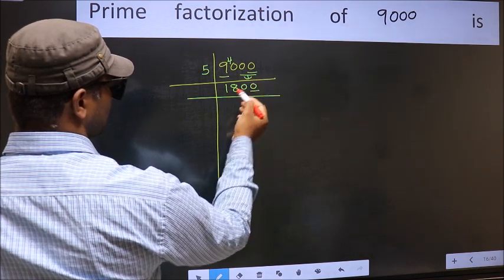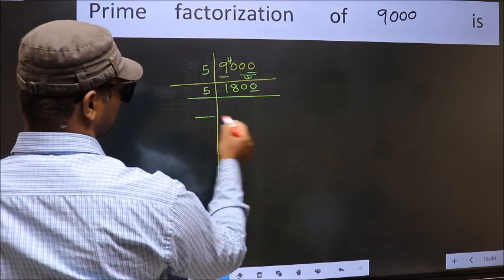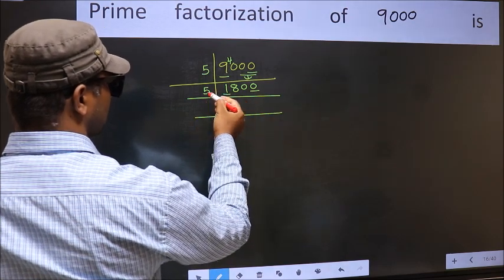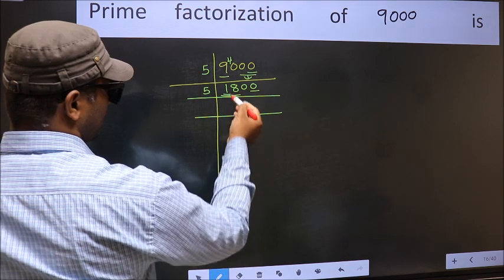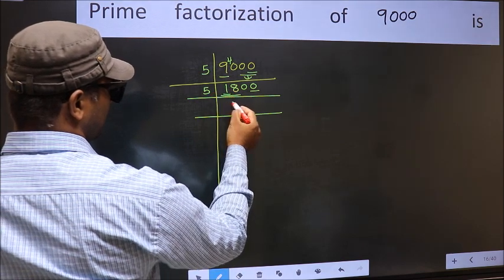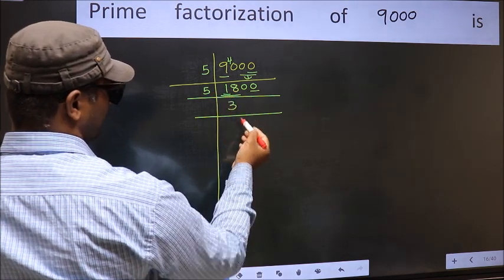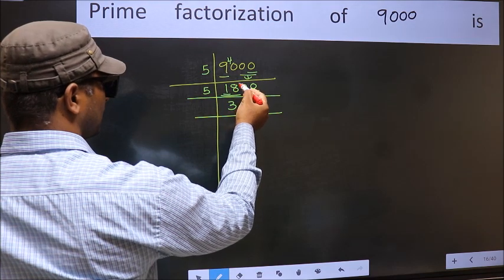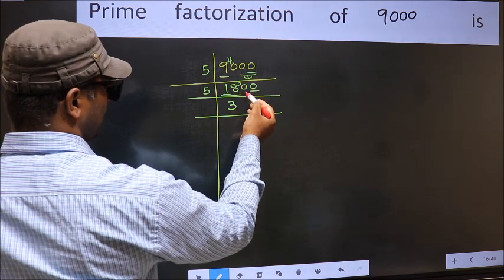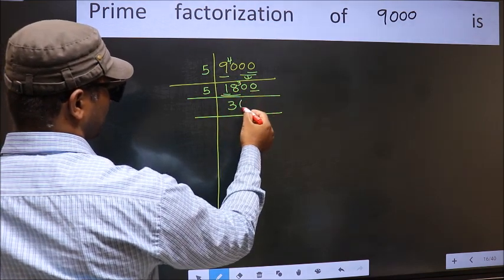Now last digit is 0 so take 5. First number 1, smaller than 5, so 2 numbers, 18. A number close to 18 in 5 table is 5 times 3 is 15. 18 minus 15, 3. 3 carried forward, 30. When do we get 30 in 5 table? 5 times 6 is 30.